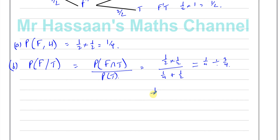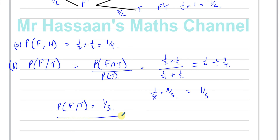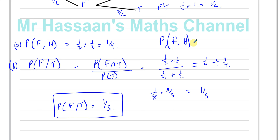So we end up with one quarter divided by three quarters, which is one quarter times four over three, giving us one third. The probability that she picks the fair coin given that it lands tails up is one third. So the answer to part B is one third, and the answer to part A is one quarter — the probability of fair coin and a head.